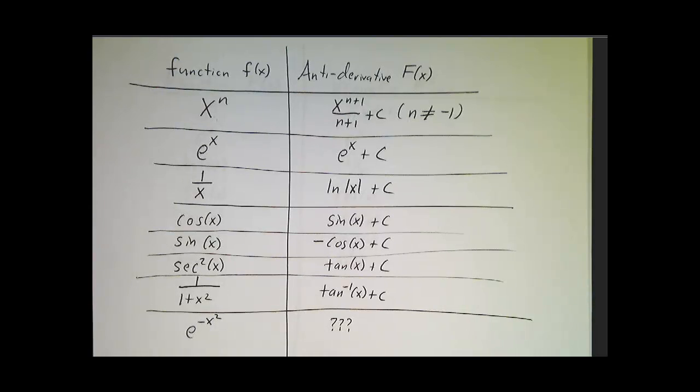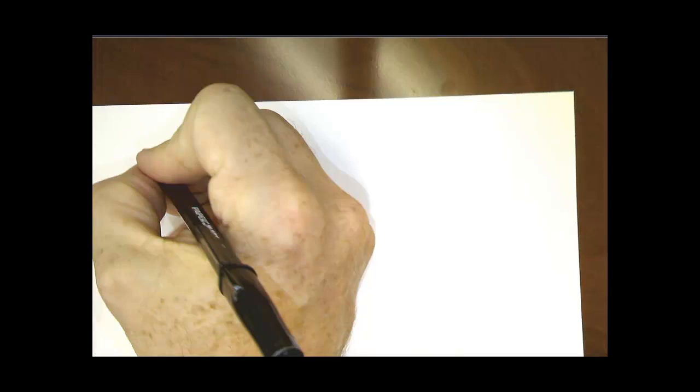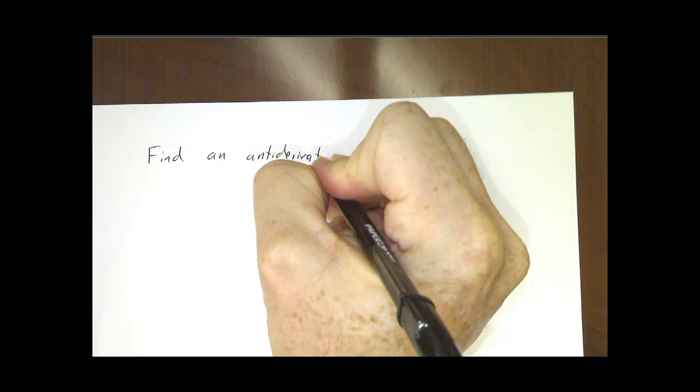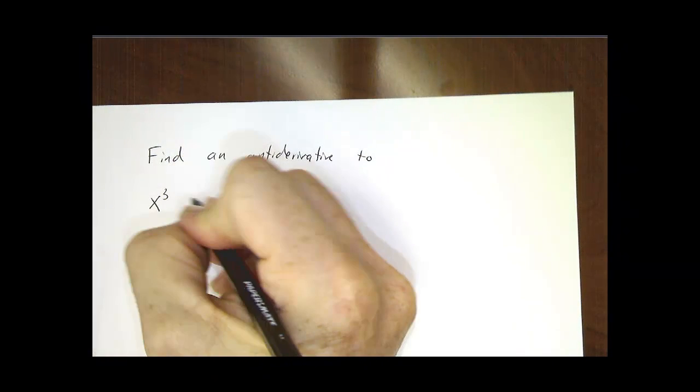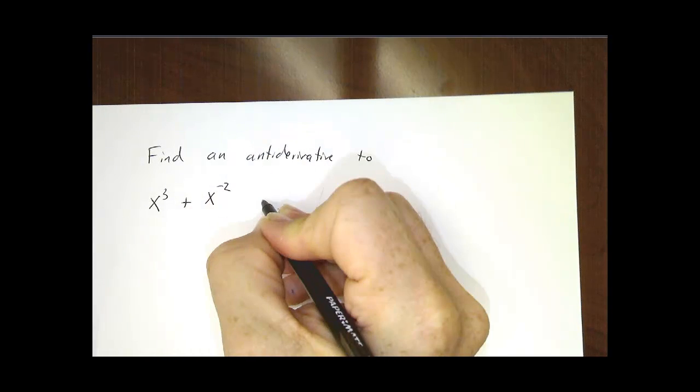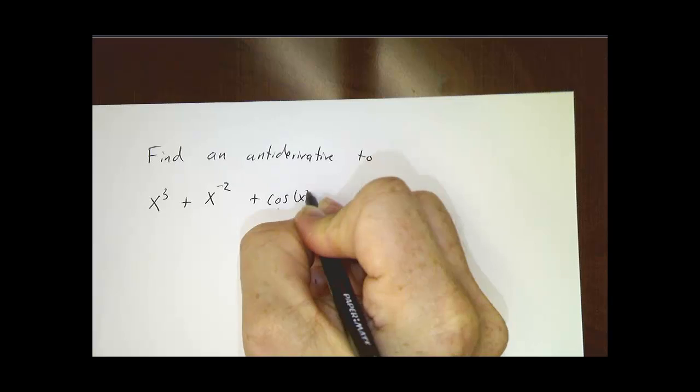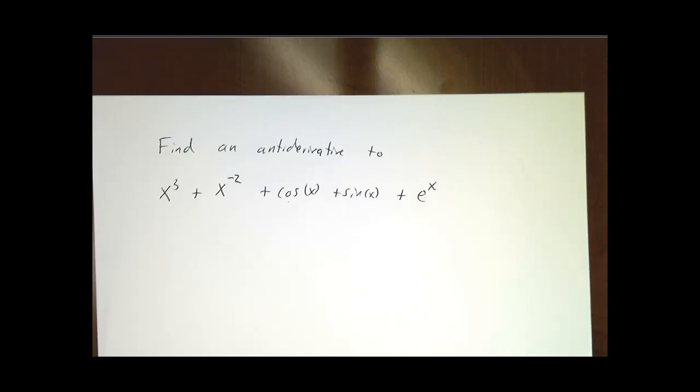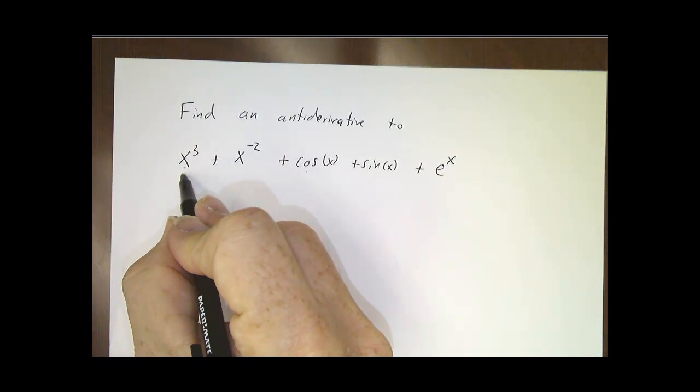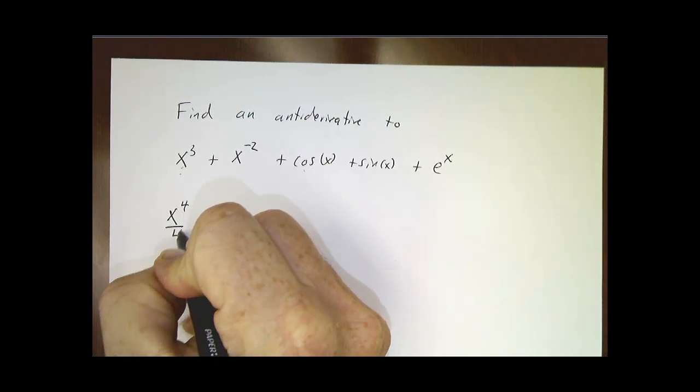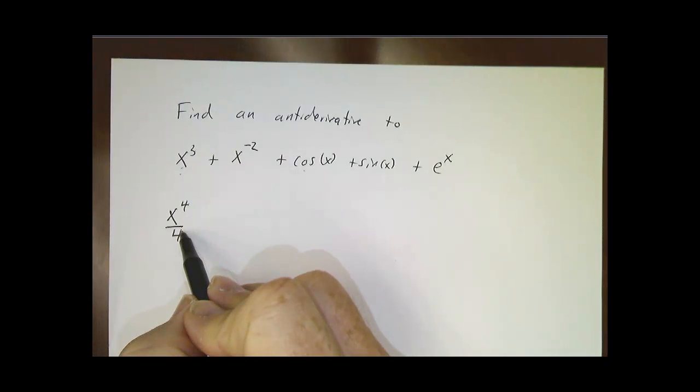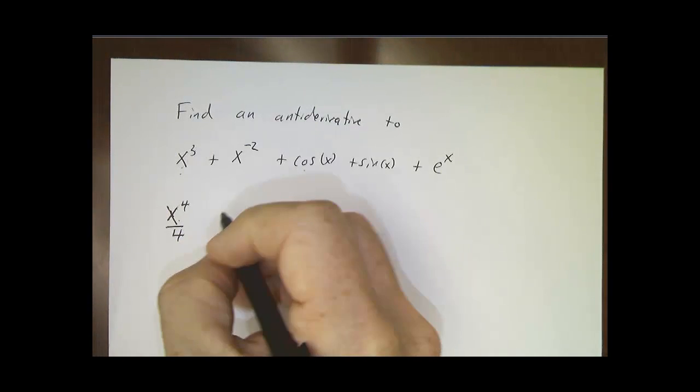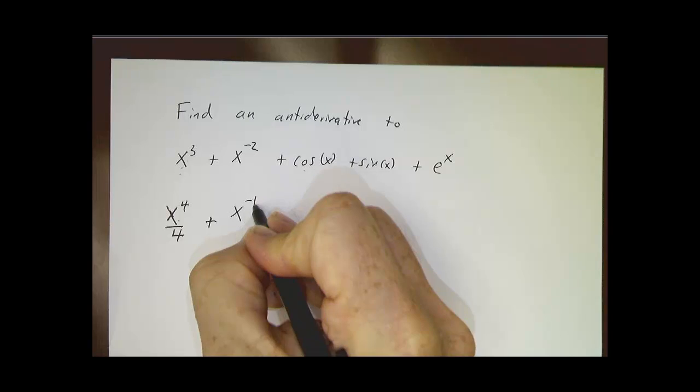So let's work an example. Find an antiderivative to x cubed plus x to the negative 2 plus cosine of x plus sine of x plus e to the x. So what's a function whose derivative is x cubed? Well, x to the fourth over 4. We take one more power and divide by that power. And you take the derivative of x to the fourth over 4, that gives you 4x cubed over 4, which is x cubed. Here you get x to the minus first over negative 1.